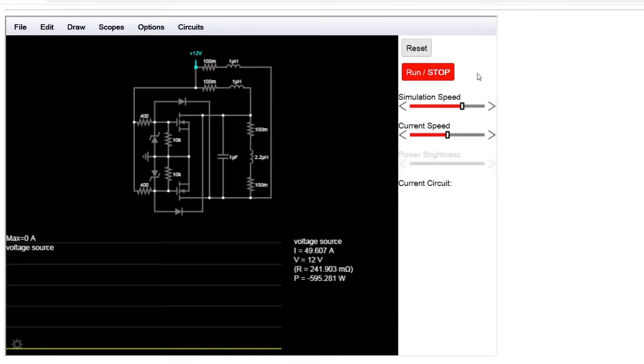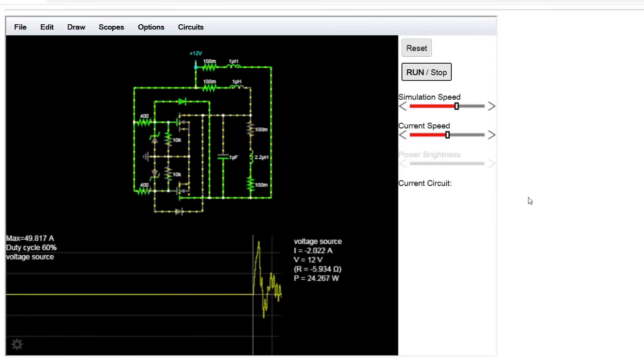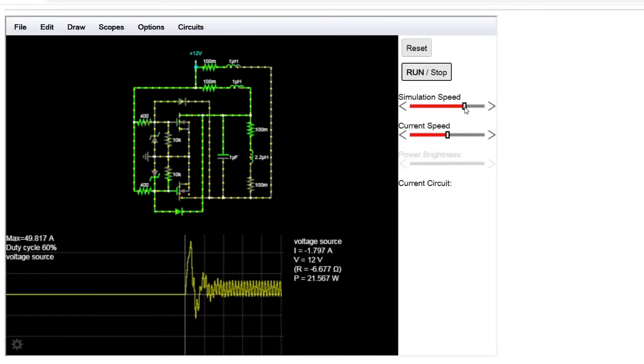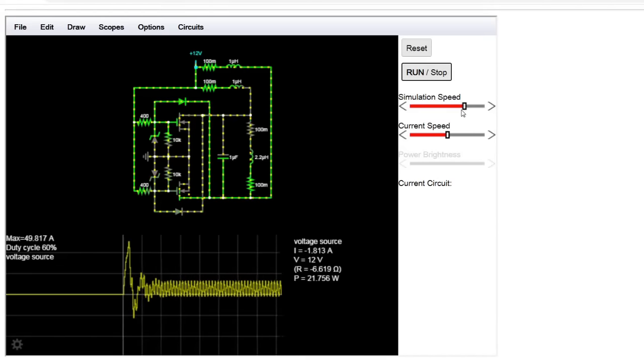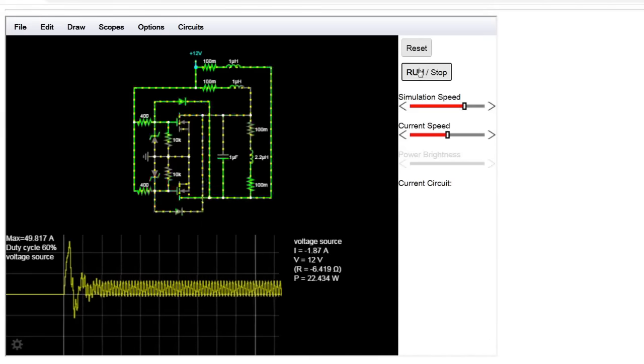This time I've reduced the choke values from 100 micro-Henry to just 1 micro-Henry. Watch the supply current in the bottom window. It spikes to nearly 50 amps at startup and never really reaches a steady output. Instead it oscillates with the circuit because there's so little impedance to buffer it from the alternating current.